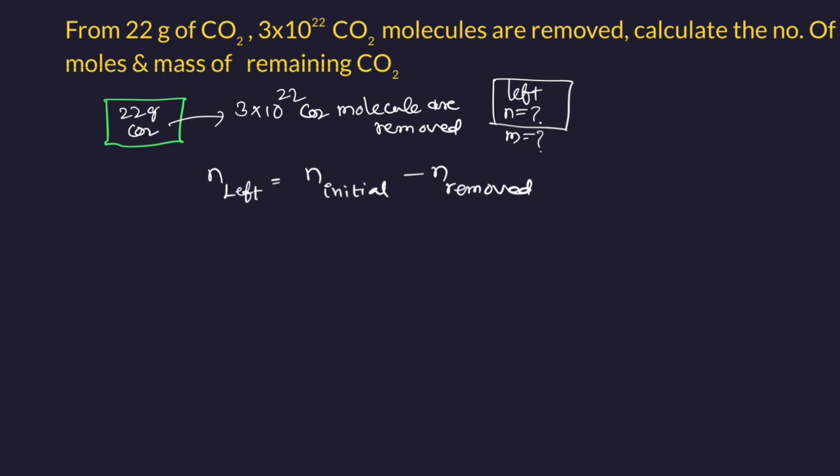Now first of all, we have to calculate initial minus removed. Number of moles initial equals mass by molar mass. Mass is given as 22 grams divided by 44 grams per mole. After cancellation, you will get 1/2, or 0.5 mole.